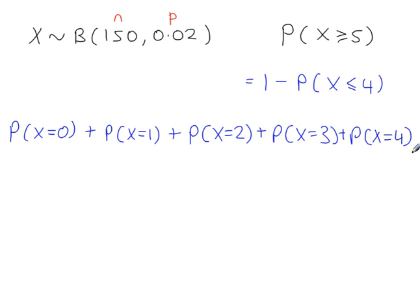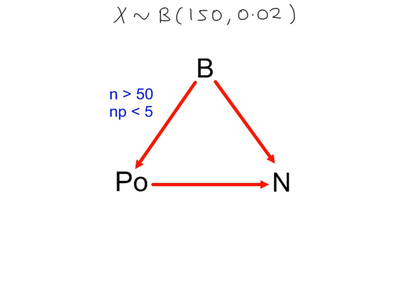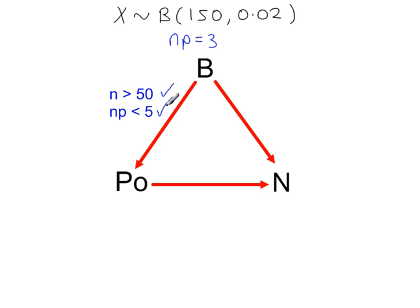So instead, we can use a Poisson approximation to solve this problem. Going from the binomial to the Poisson distribution, two conditions need to be met: we need a large value for n — we have 150, so this condition is met — and the mean value of the binomial distribution, NP, must be small, less than 5. NP is equal to 3, so the second condition is also met.